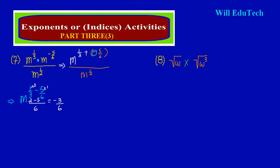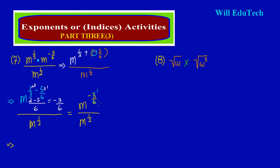Now remember all of this was in my numerator — it's only my numerator where I have evaluated the powers. All of this is over m raised to the power of a half. So we have m raised to the power of negative 3/6 all over m raised to the power of 1/2. We can simplify the power in the numerator: 3 into itself goes once and 3 into 6 goes 2 times, so in the numerator we have m raised to the power of negative 1/2.